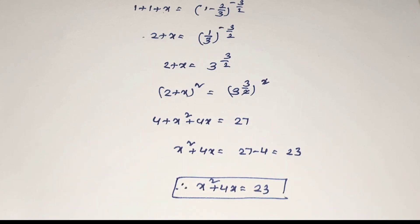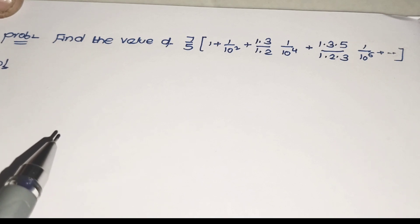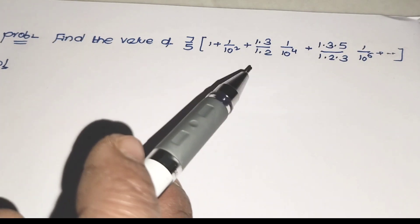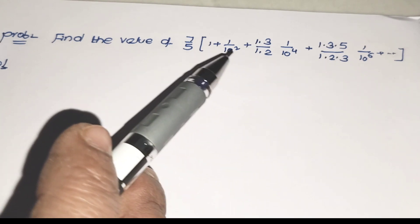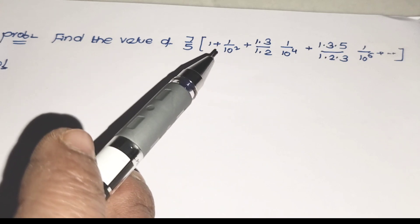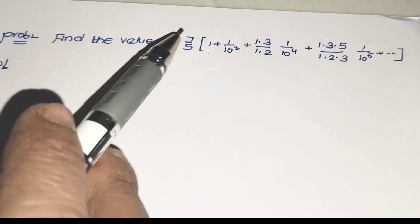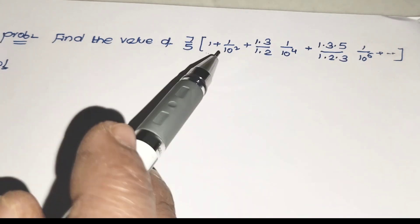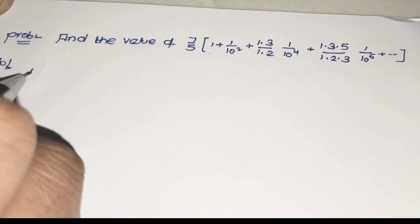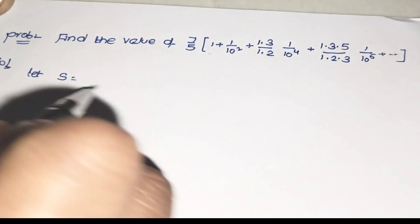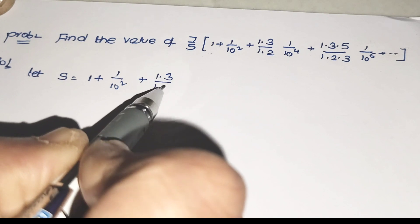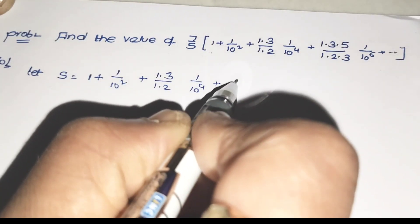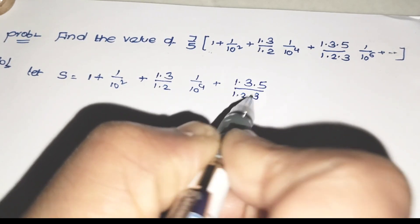The answer is x² + 4x = 23. Now the next problem — the last question on sum of the infinite series. Find the value of (7/5) × (1 + (1/10)² + (1×3)/(1×2)×(1/10)⁴ + (1×3×5)/(1×2×3)×(1/10)⁶ + ...). To solve this, I take only the inner series part as s, leaving the 7/5 factor aside for now. So s = 1 + (1/10²) + (1×3)/(1×2)×(1/10)⁴ + (1×3×5)/(1×2×3)×(1/10)⁶ + ...